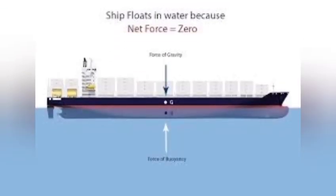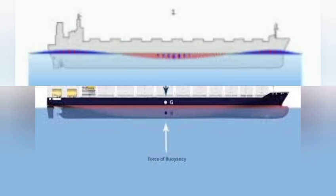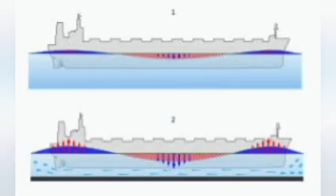Continuity law causes the water to move faster where the water level section is smaller. According to Bernoulli's principle, the increasing velocity causes low pressure, such that the ship is pulled down.